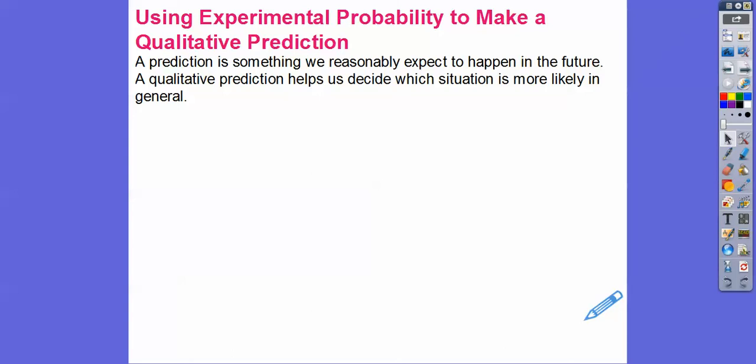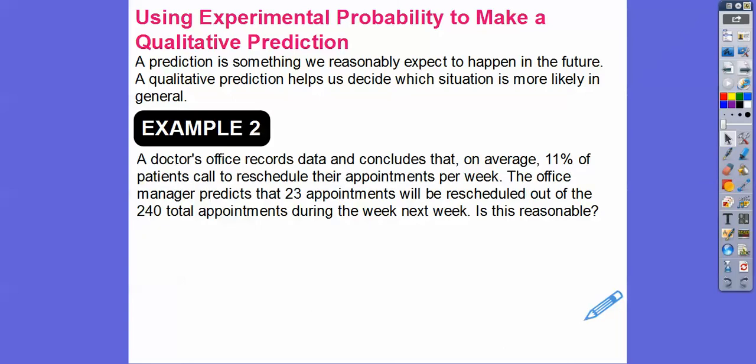So a prediction is something we can reasonably expect to happen in the future. A qualitative prediction helps us decide which situation is more likely in general. So here's an example. A doctor's office records data and concludes that on average, 11% of patients call to reschedule their appointments per week. I sometimes do that. It just happens sometimes. Your life gets in the way.